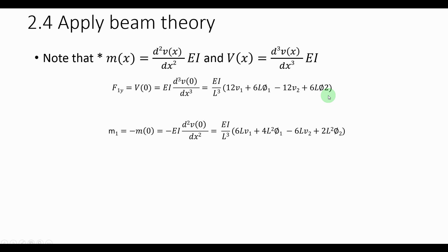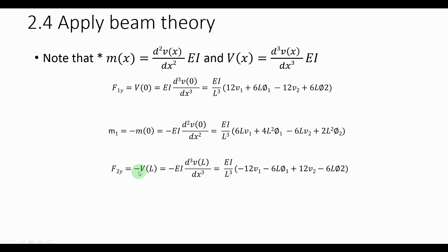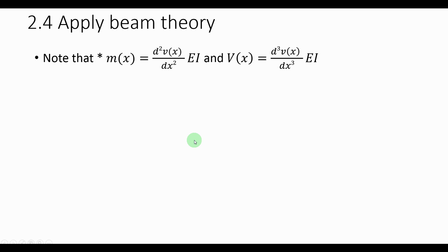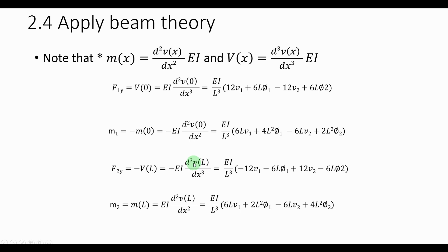Now moving to the force at node 2, F2Y equals the negative of the shear force at x = l, since the two forces are in opposite directions — hence the negative sign. For the moment at node 2, M2, note that the moments are in the same direction, making them positive. The third derivative of the displacement equation evaluated at l gives the F2Y equation, and the second derivative evaluated at l gives the M2 equation. Note: the subscript '2' shown should be φ2, not multiplied by 2 — please don't get confused.